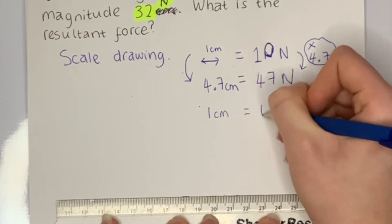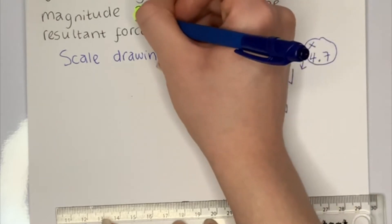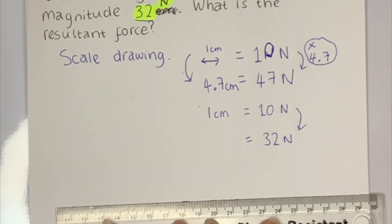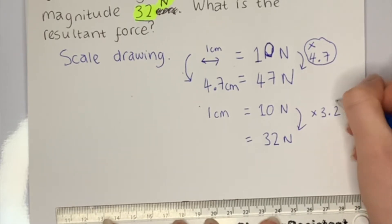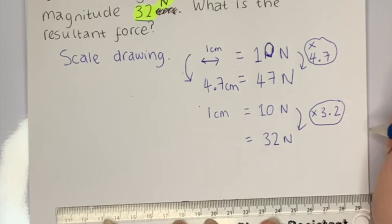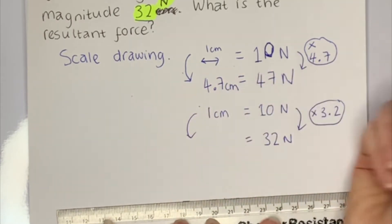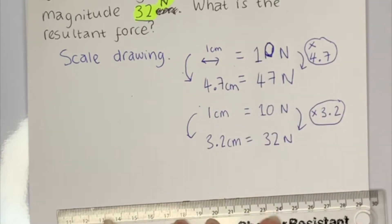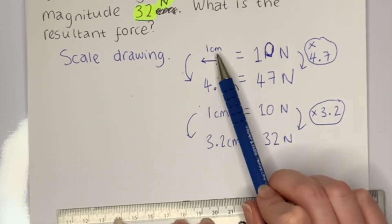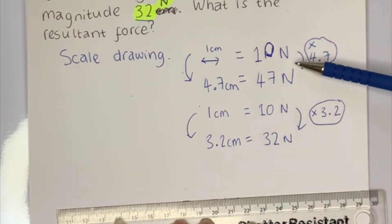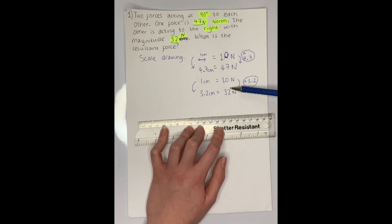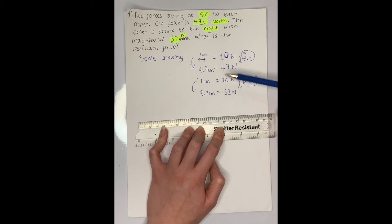For the second force, one centimetre equals 10 newtons, and the force is 32 newtons. What do I multiply 10 by to get 32? 10 times 3.2 is 32, so I'm going to get 3.2 centimetres. You can set the scale to anything, but you want to make it easy for yourself. For this question I set one centimetre as 10 newtons, so I represent 47 newtons as an arrow of 4.7 centimetres, and 32 newtons as an arrow of 3.2 centimetres.